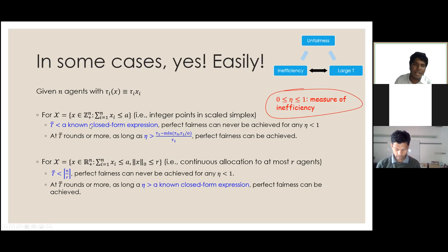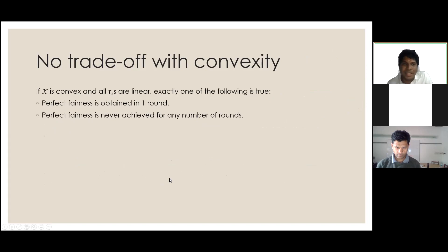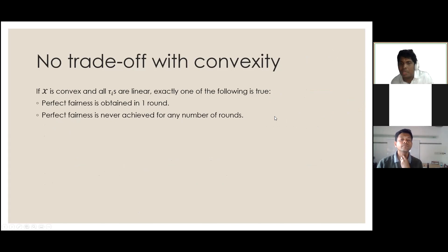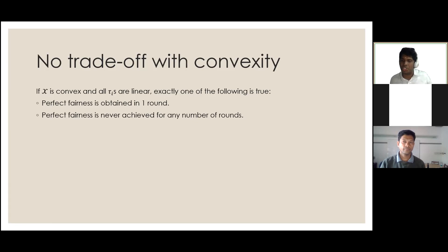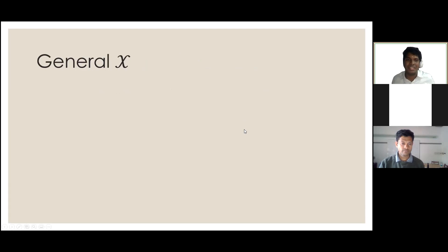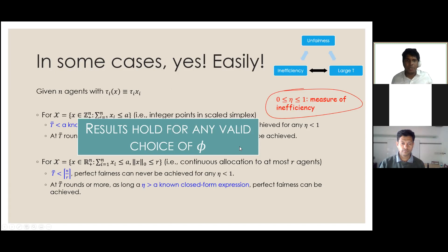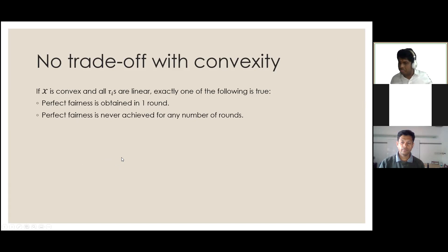We looked at two special types of feasible set: the simplex and a simplex with sparsity constraints. For convex sets, the third trade-off involving large T is essentially useless: if your feasible set script X is convex, then either you get perfect fairness in just one round or perfect fairness is never achieved. This means repeated decision-making is only interesting if the set of possible allocations is a non-convex set — a simple enough proof but surprising and nice to know.